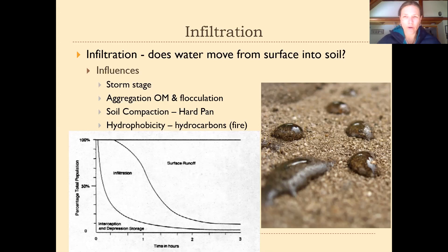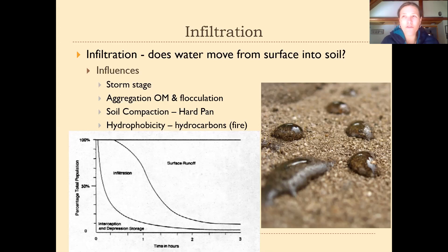Not all rainfall is the same — rainfall that's really intense with a big burst of water all at once may be more difficult for soil to handle than gradual, soft, continued rainfall. Even within a storm, in the very first part, vegetation over the surface — trees, bushes, grass — will actually intercept or capture the moisture, getting caught on leaves or blades of grass without making it down to the ground at all. That's called interception. As the storm continues, the capacity for plants to hold moisture is overwhelmed, and water starts making it down to the soil surface and infiltrating. At some point the soil's ability to infiltrate is also overwhelmed, and then we start to see surface runoff.